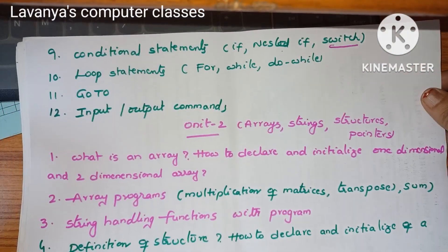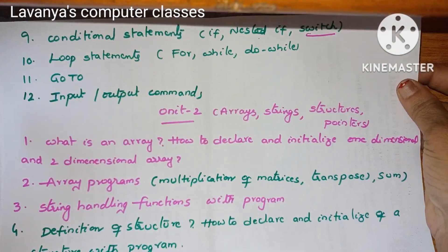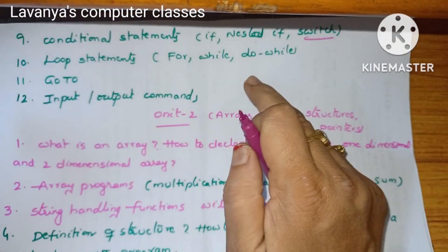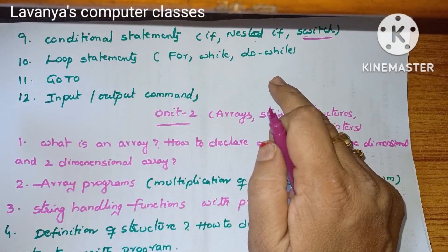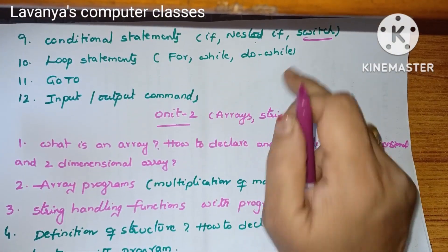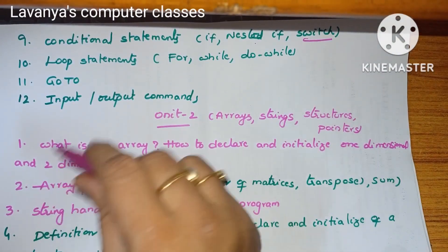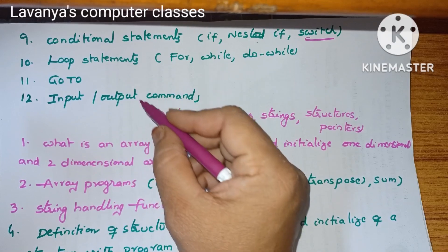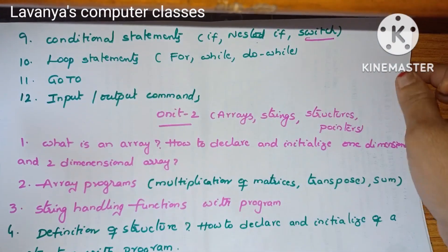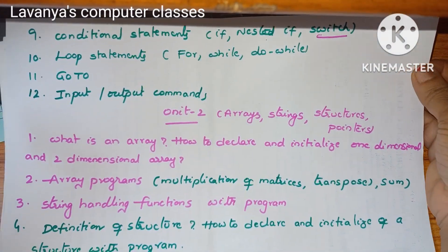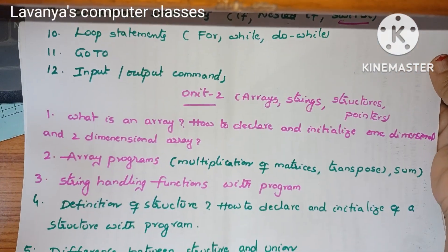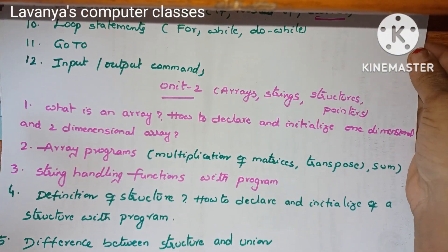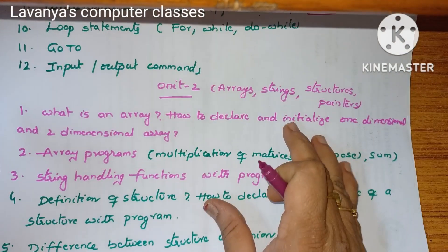Next, looping statements: for loop, while loop, do-while loop with example programs, then goto statement. A simple question is: what are the input and output commands in C language? That covers unit 1.